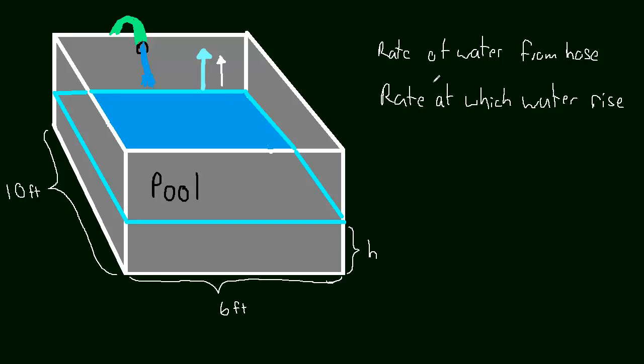So this is going to be our first problem and let's get into it. Let's see if we can find this relationship between the rate at which the water pours out of the hose compared to the rate at which the water rises. So we'll do that starting in the next video. See you then.